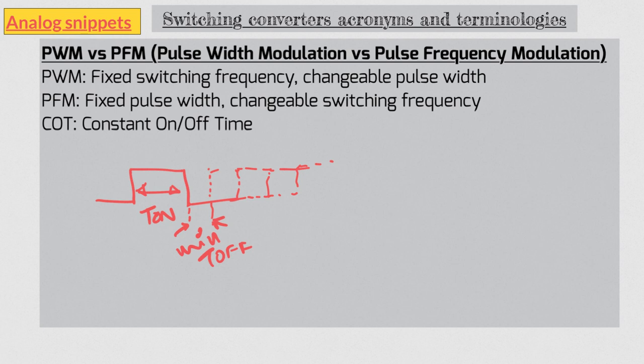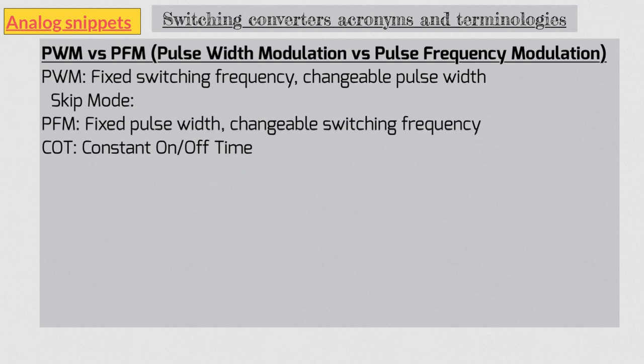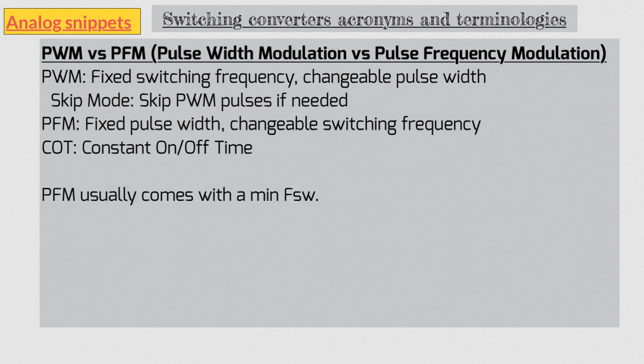As opposed to this, PWM keeps switching at constant frequency. But there is a way to improve efficiency in PWM as well, and this is known as skip mode operation. At low load currents we can decide to skip some of the PWM pulses. One of the disadvantages of PFM is that the frequency spectrum can be all over the place, and it especially becomes a problem if it starts to enter the audio frequency range. So PFM usually comes with a guaranteed minimum switching frequency as well. Okay, so that is all about PWM and PFM in this video.